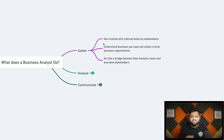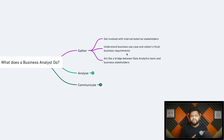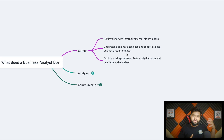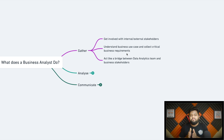Second is to understand the business use case and collect critical business requirements. Whatever problem the internal or external customer comes with, you need to understand it thoroughly, asking questions back and forth. Whatever information you collect here will be passed to the engineering team. If you fail to collect the right information, there will always be a gap — the engineering team won't know what data to bring in, what business rules to apply. You are the one who fills that gap.